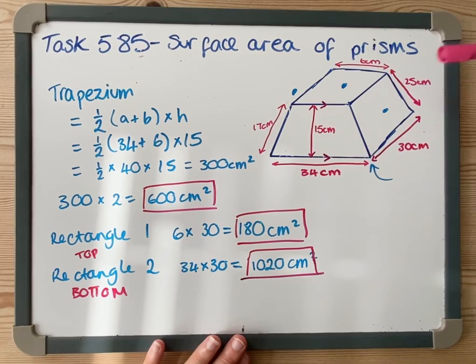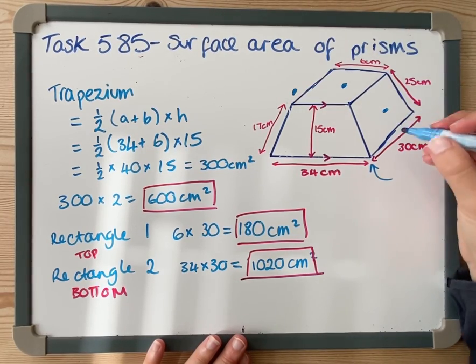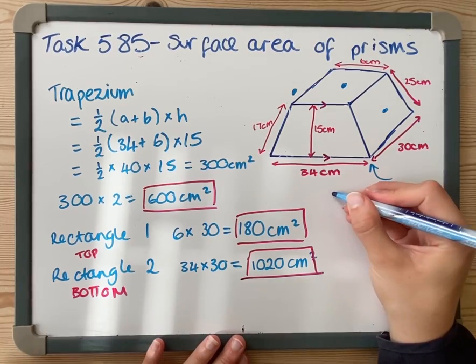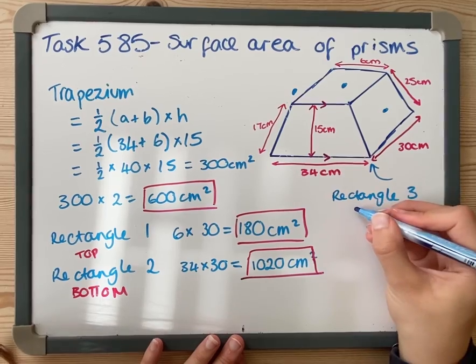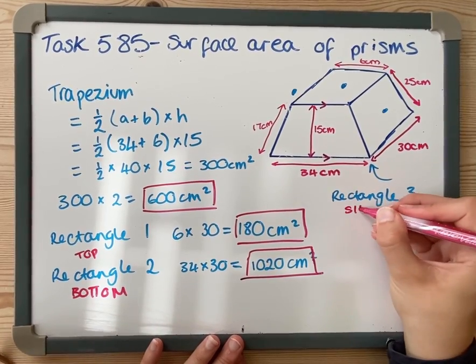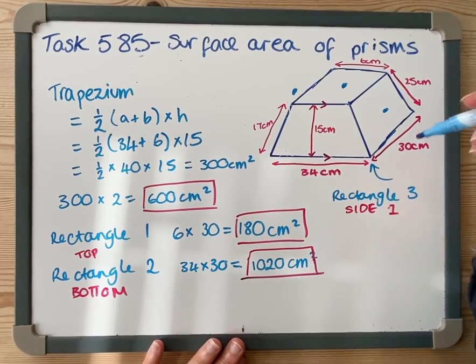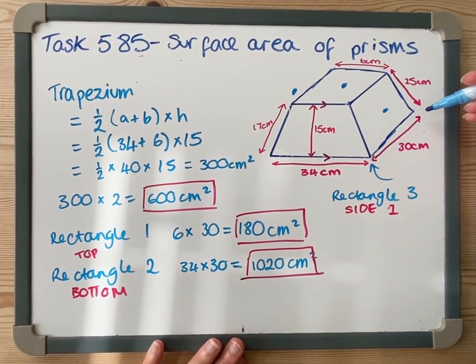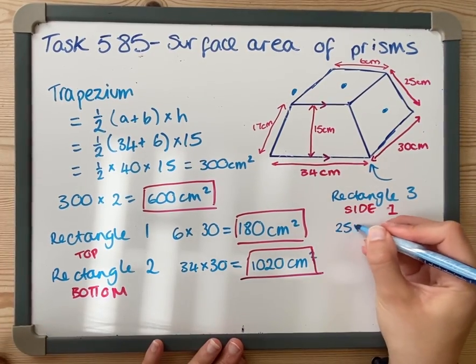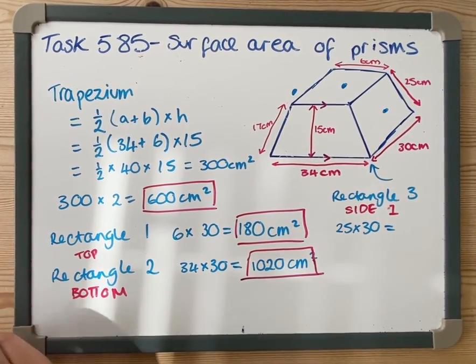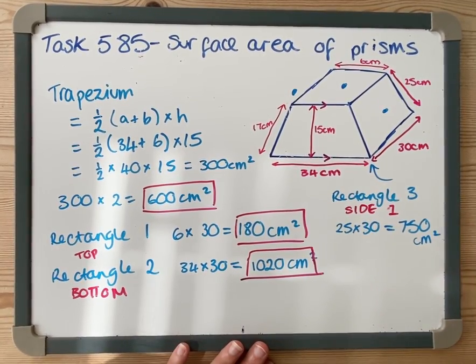So I've got the top, bottom, and I've got the two trapeziums. I now just need the ones on the sides. This is going to be rectangle three, one of the sides. So I've got it goes along 30, so width is 30, length is 25. So 25 times 30, 750 centimeters squared.